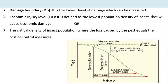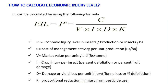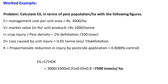Economic Injury Level (EIL) is the lowest pest population density that will cause economic damage. It is the critical density of the insect population where the loss caused by the pest equals the cost of control measures. There is a formula to calculate the economic injury level in pest-affected fields, which allows us to determine how many insects per hectare cause economic injury — for example, around 7,500 insects — and how much damage they cause in that affected field.